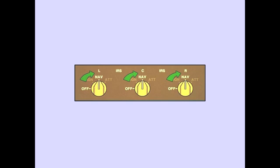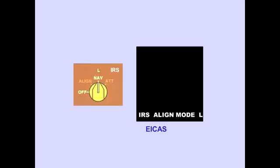The alignment process is initiated by rotating the selector from OFF directly to NAV. The alignment completes in 10 minutes. After an internal self-test, the EICAS memo message, IRS Align Mode, is displayed, indicating alignment is in progress.